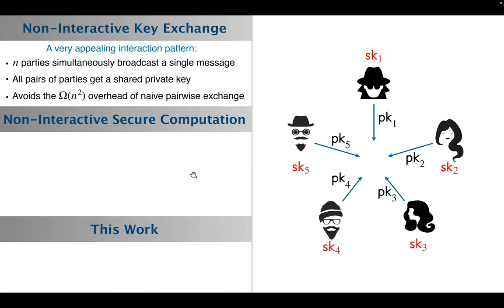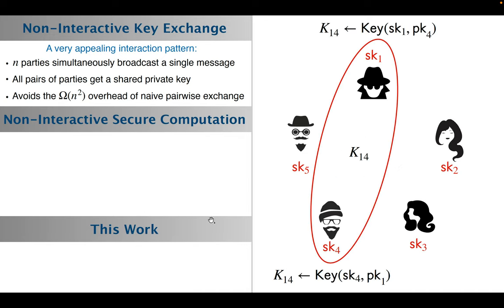Non-interactive key exchange is well known in cryptography. It has a very appealing interaction pattern: n parties simultaneously broadcast a single message, their public key. Given these simultaneous broadcasts, each pair of parties can locally compute its shared key. The nice thing about this interaction pattern is that it avoids the n-square overhead of a naive pairwise key exchange.